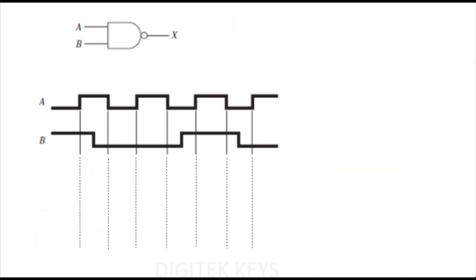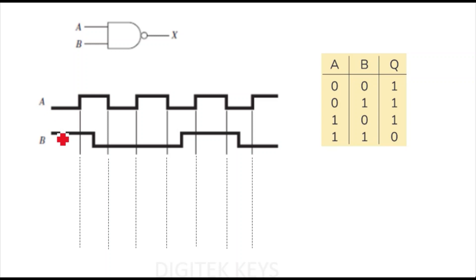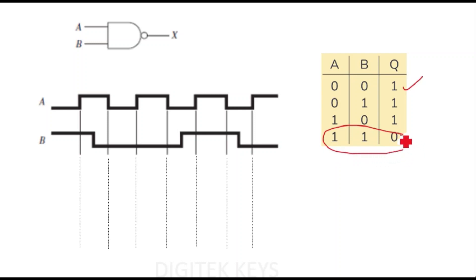Please like and subscribe to my channel. Now, for the first question, a two-input NAND gate is given. Our first task is to draw the truth table. For a NAND gate: 0,0 gives 1; 0,1 gives 1; 1,0 gives 1. The key point to remember is that only the 1,1 combination gives you 0. When both inputs are 1, you get output 0; in all other cases, you get output 1.